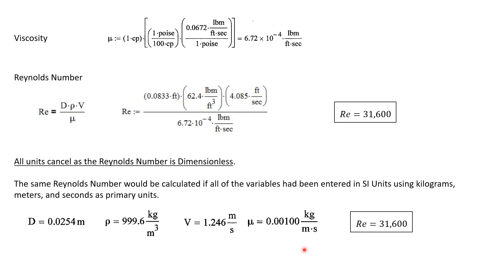If we plug these values into our Reynolds number equation, we'll get the same result, 31,600. Because once again, the Reynolds number is a dimensionless number.